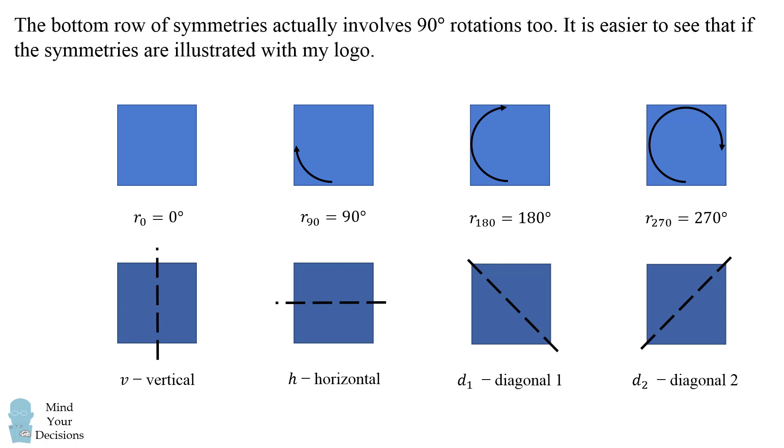Now the bottom row of symmetries actually looks like it's completely different than the top row. But they actually involve 90 degree rotations too. And it'll be easier to see this if I illustrate the symmetries with my logo.